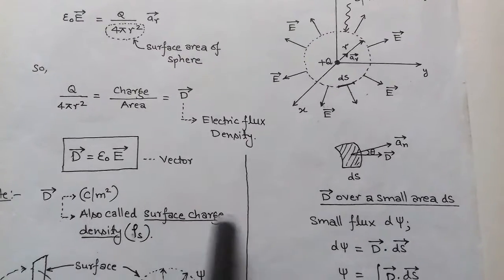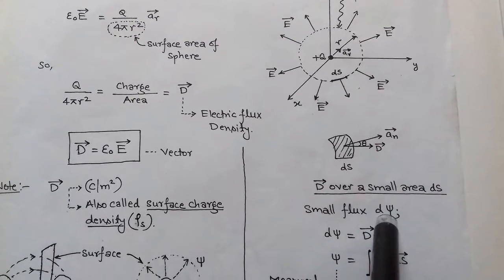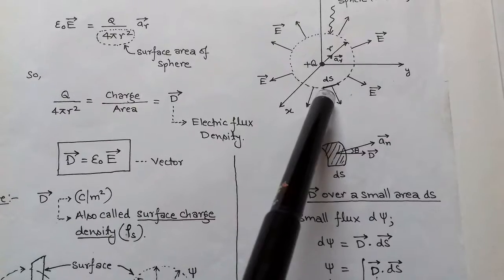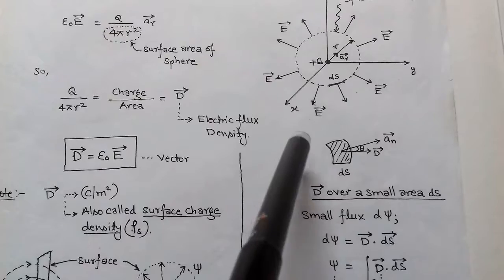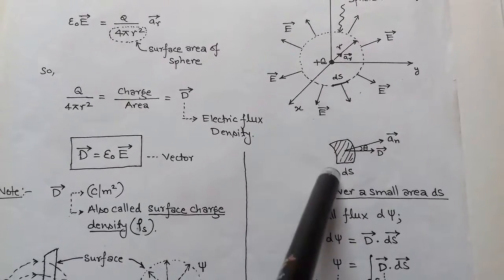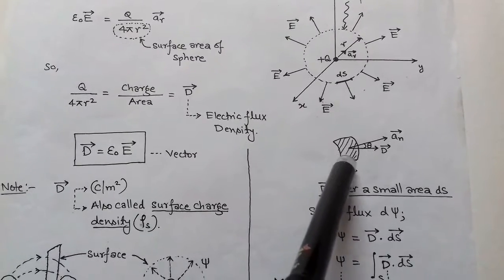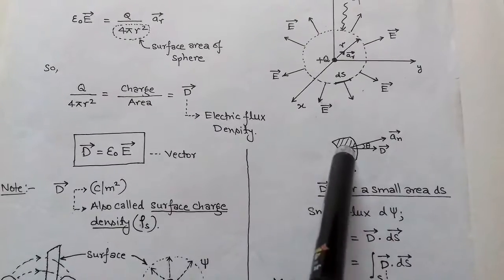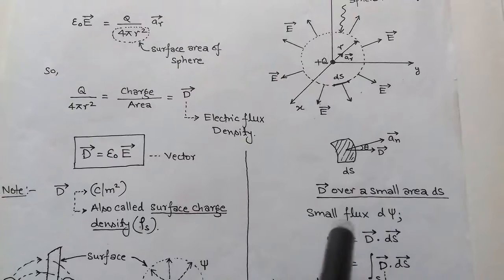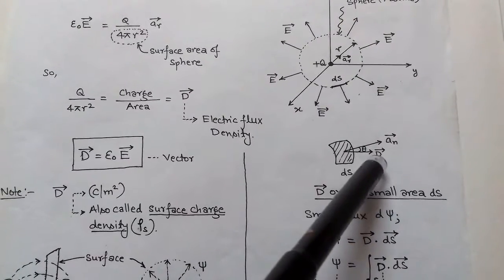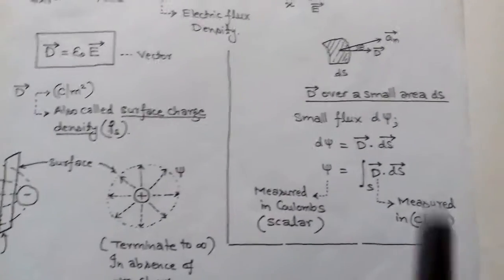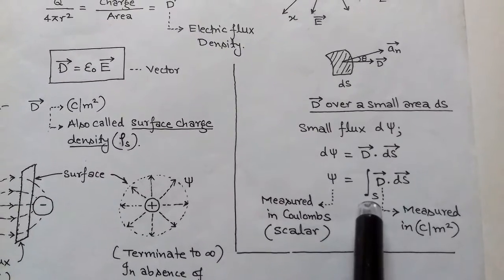Electric flux is denoted by ψ and represents the electric flux lines passing through some surface. When there is no negative charge, the flux terminates to infinity. From the figure, we assume a sphere of radius R and take a small differential surface dS on this sphere. dS has a normal direction, and the flux line passing through this surface area is a small flux dψ. The value of dψ is the dot product of D and dS vector. To find total flux, we take a surface integration.